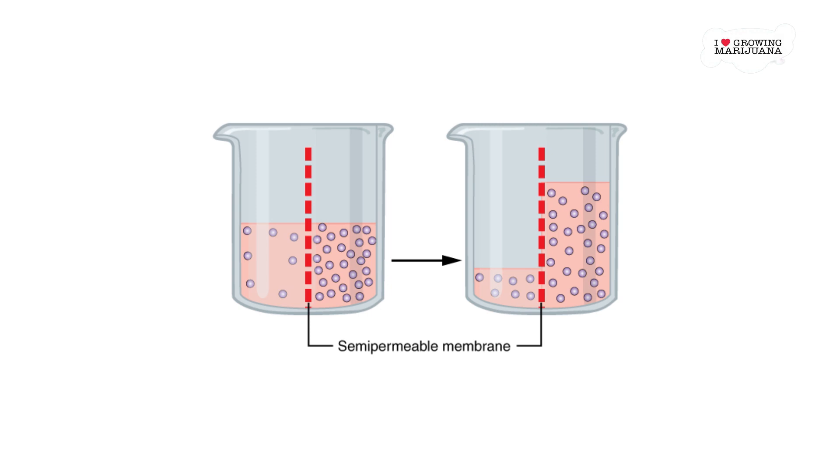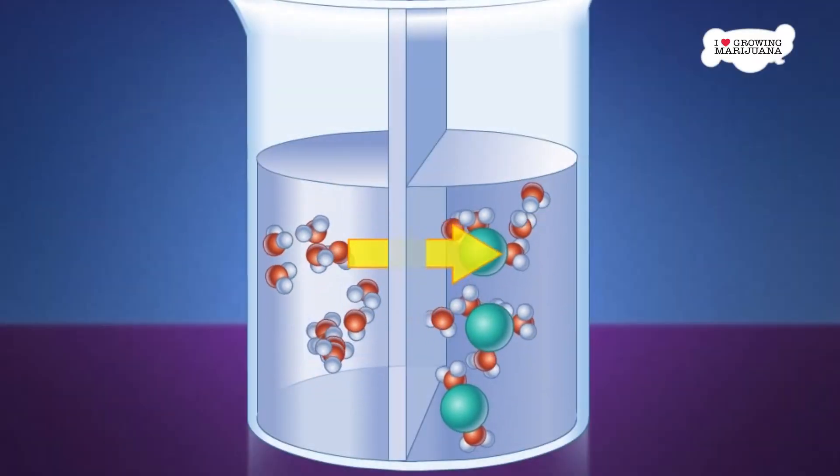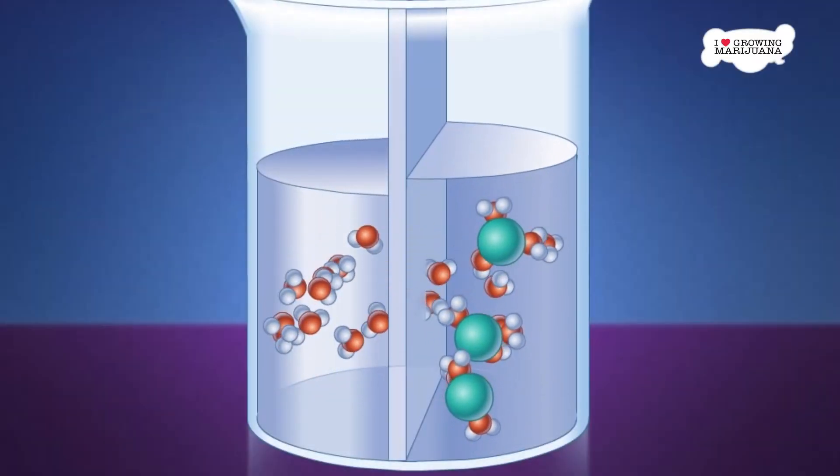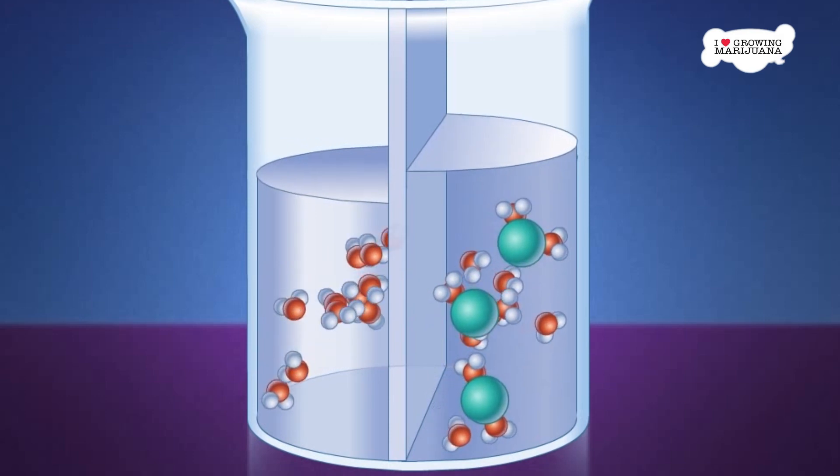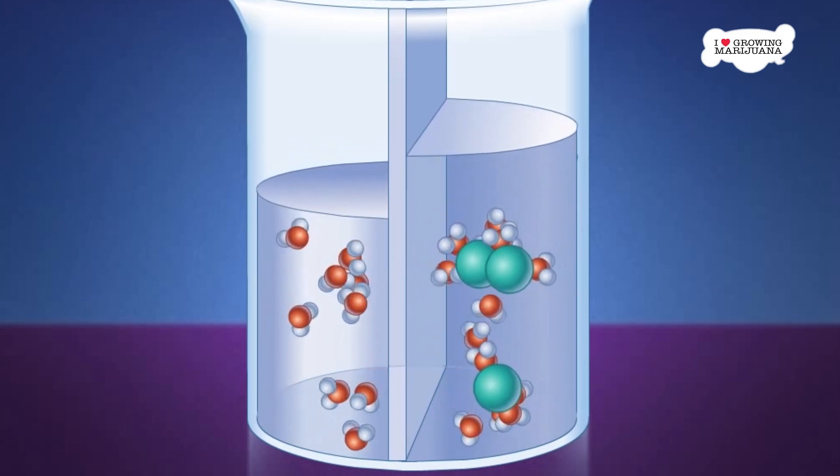Water can move through between the containers, but solutes are unable to pass. Water will always move to the container with a higher concentration of dissolved solids, thus diluting it. This movement doesn't need any energy to function, and it won't stop until there is an equilibrium.